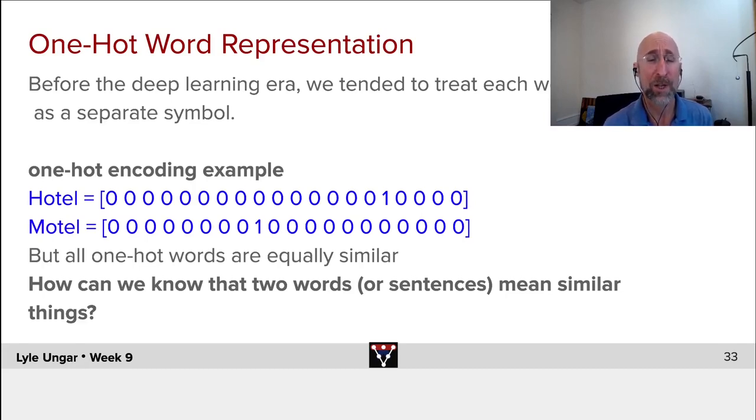a word like hotel is going to be a million-dimensional vector. I didn't show a million dimensions. Which, is it the word A? Is it the word apple? Is it the word aardvark? And so forth. And eventually, it's the word hotel. And it's not the other 999,999 words. It's one one and a bunch of zeros.